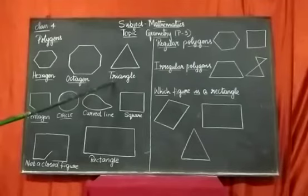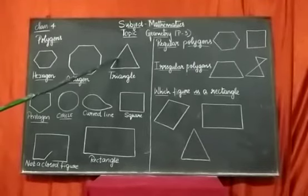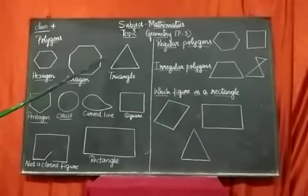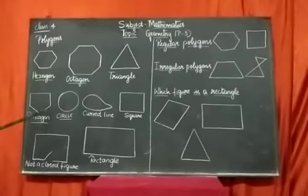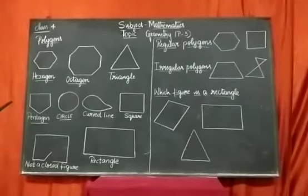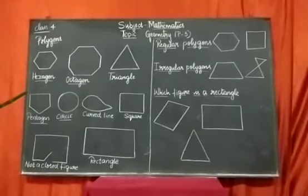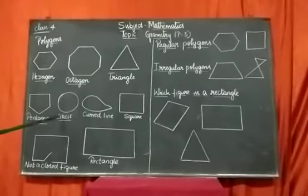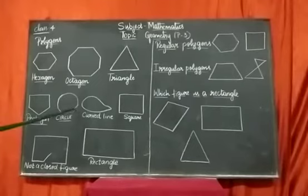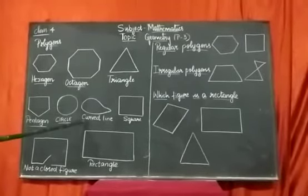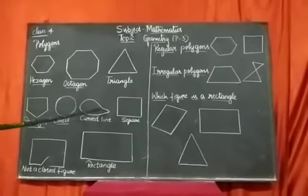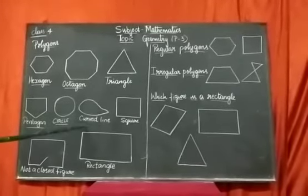Next, triangle. Triangle is also a polygon. A pentagon has 5 sides. But a circle is not a polygon as it is made up of curved lines — no straight line is there in a circle. Curved lines like this — this is also not a polygon.